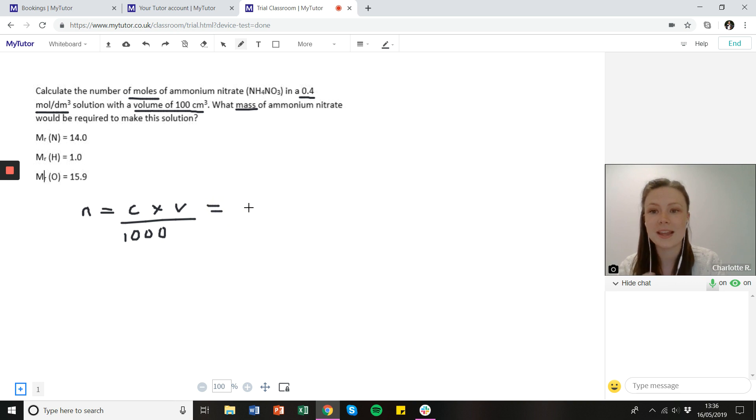If we pop the numbers in from our question we put in 0.4 multiplied by 100 divide by 1000, and that gives us the number of moles as 0.04 and it has the units of mole. So that's the first part done, nice and easy.